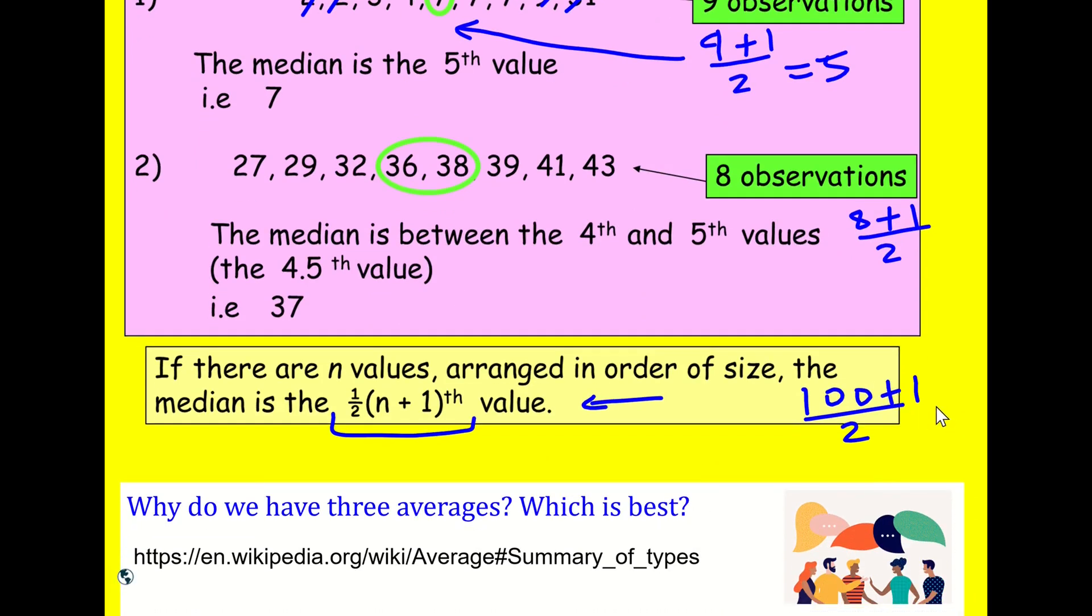So my next question is, why do we have three averages? Why do we have the mean, mode, median? And which is the best? I've kind of given you some feeling of perhaps of why, you know, some, some are not the best, or why some don't work in some situations, but I want you to pause the video and have a think about this.